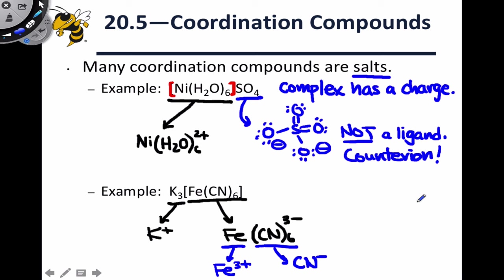That's especially important in cationic complexes where the counterion is going to look a lot like a ligand and, in some cases, can serve as a ligand when other metal centers or other ligand sets are involved.